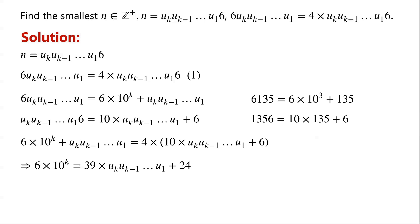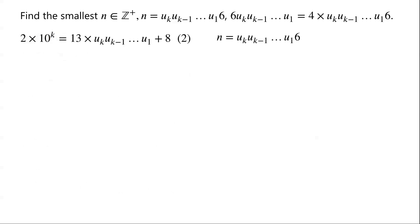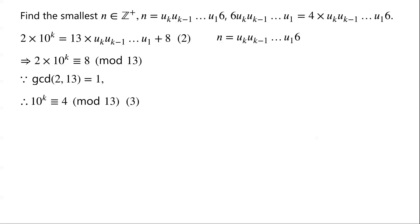Dividing the equation by 3, we have: 2 × 10^k = 13 × (u_k, u_{k-1}, ..., u_1) + 8. As the right-hand side of the equation is congruent to 8 modulo 13, so 2 × 10^k is congruent to 8 modulo 13. Because the greatest common divisor of 2 and 13 is 1, the equivalence relation can be written as 10^k ≡ 4 (mod 13).